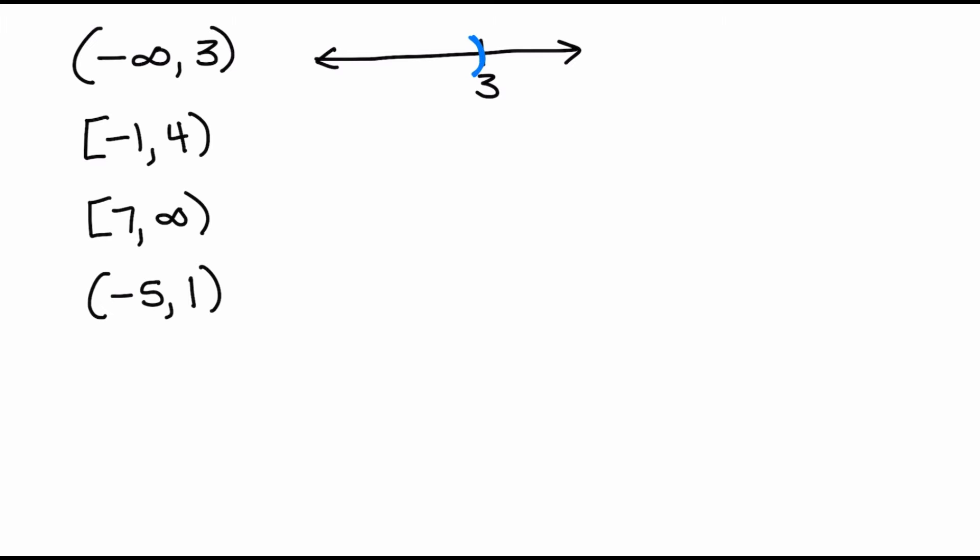The first one says I want all the numbers from negative infinity all the way to positive 3, but it's not going to include positive 3. Parentheses indicate that I don't include that actual value — on a graph it would be an open circle. This is the same as saying x is less than 3.